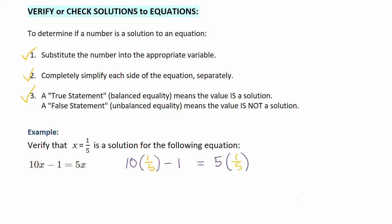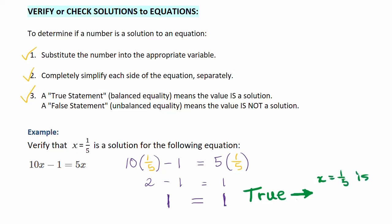On the left side of the equation, 10 divided by 5 is actually just 2. Then we put our minus 1, and 2 minus 1 is 1. Now on the right side, 5 divided by 5 is just 1. Since we get a true statement — because 1 is actually equal to itself — we can say that x equal to 1/5 is a solution to our equation.